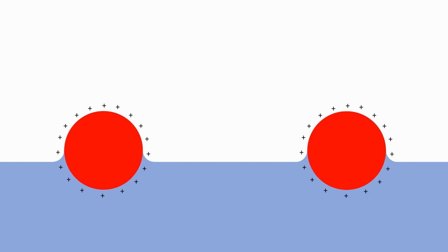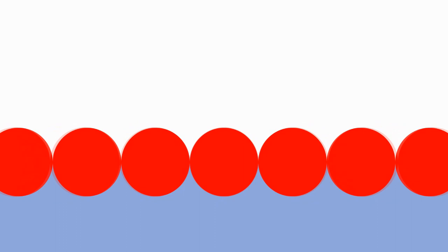The beauty of the Langmuir Blodgett technique is that we can observe and influence the interaction of these molecules and nanoparticles as an assembly and not as individual particles, meaning that in theory we can scale up the process from a petri dish to the size of a swimming pool.